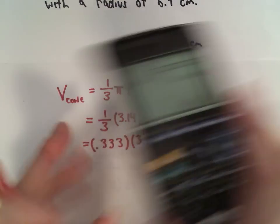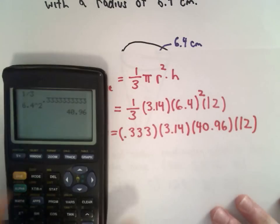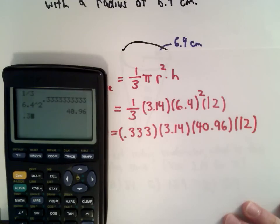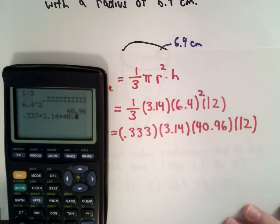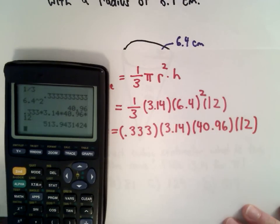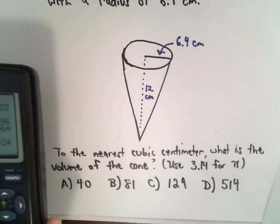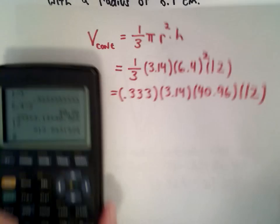And now I'm just going to multiply all of these values together. So I've got 0.333 multiplied by 3.14 multiplied by 40.96 multiplied by 12. And I believe this was to the nearest cubic centimeter.